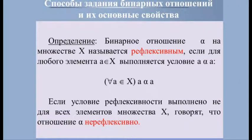Рассмотрим основные свойства бинарных отношений. Бинарное отношение α на множестве X называется рефлексивным, если для любого элемента a ∈ X выполняется aαa. В графе рефлексивного отношения в каждой вершине обязательно есть петля; в булевой матрице по главной диагонали стоят только единицы. Пример: отношение параллельности прямых рефлексивно, так как всякая прямая параллельна самой себе. Если условие рефлексивности выполнено не для всех элементов, отношение называется нерефлексивным. Примеры нерефлексивных отношений: «заботиться о», «развлекать», «нервировать».